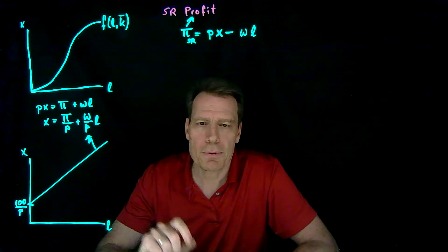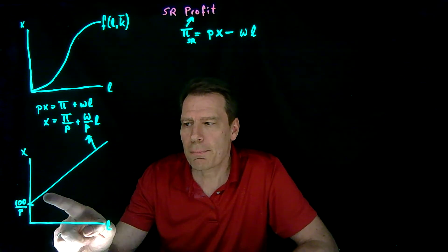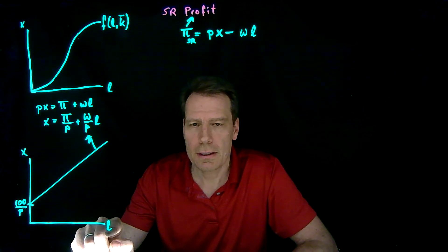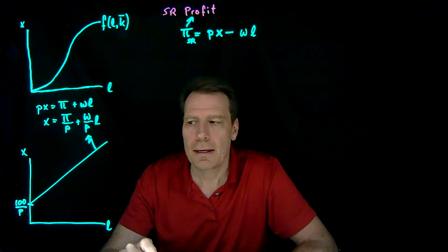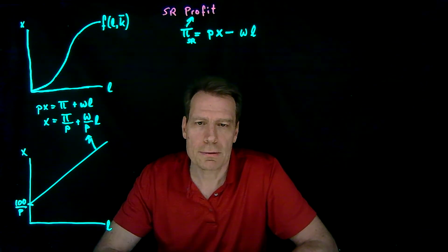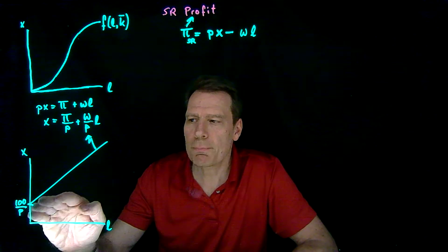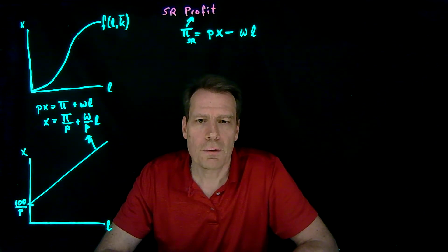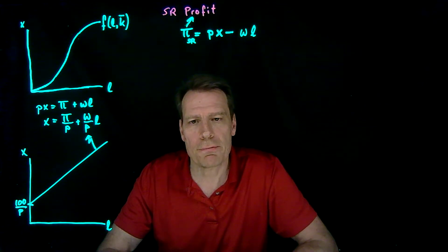Now what does that line represent? That line represents all the production plans, all combinations of the input labor and the output x, such that profit is $100. So it represents a profit line, or sometimes it's called an isoprofit line, of all the ways that you could make $100 in profit.